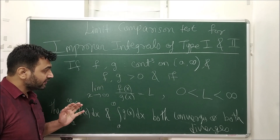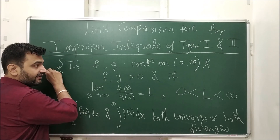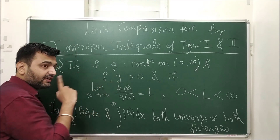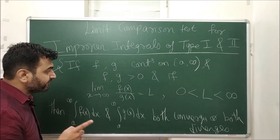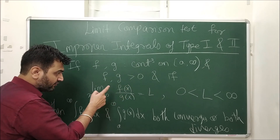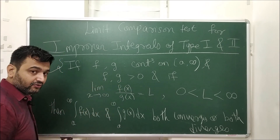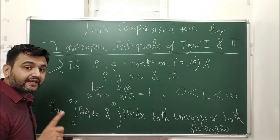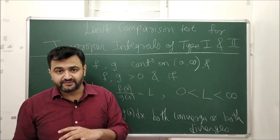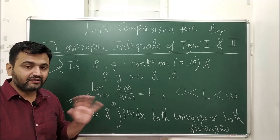Now if you compare this with direct comparison test: it also requires continuity, and there f, g ≥ 0 was okay, but here f and g must be strictly greater than zero because you can interchange — you can take f upon g or g upon f. So here we want strictly greater than zero. And to use direct comparison test you need to be able to compare two functions — which one is bigger, which one is smaller. But here there is no such problem of comparing.